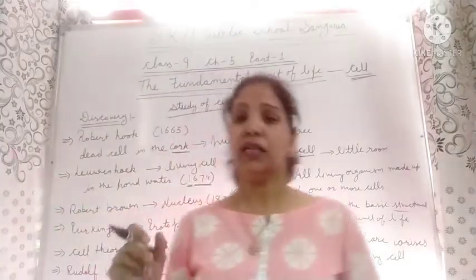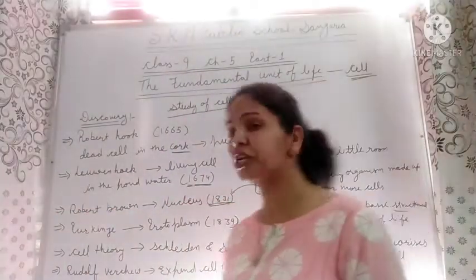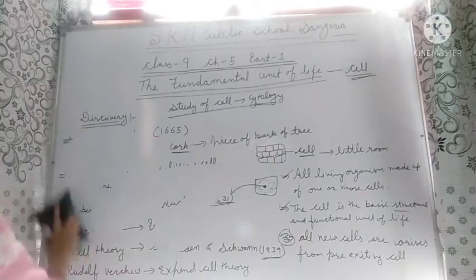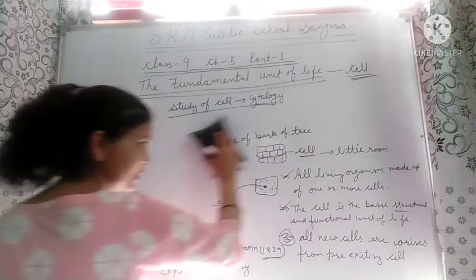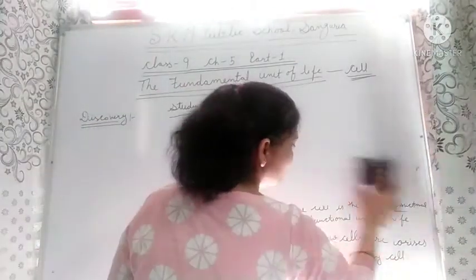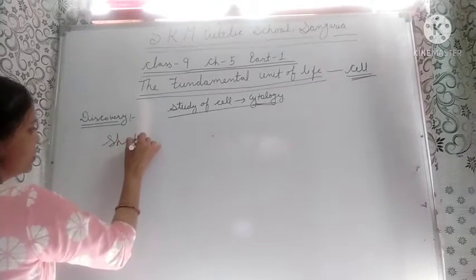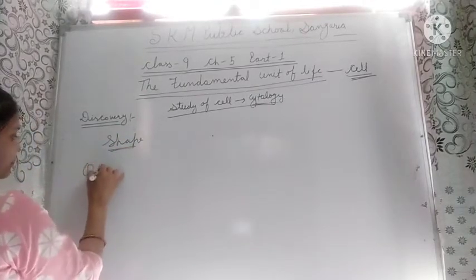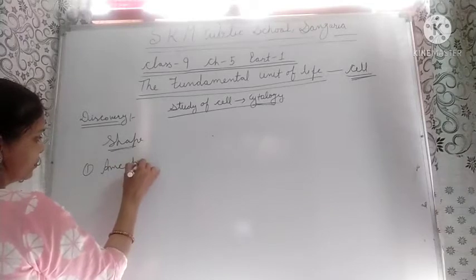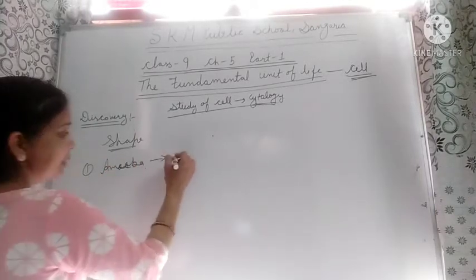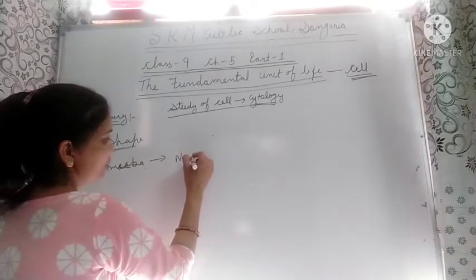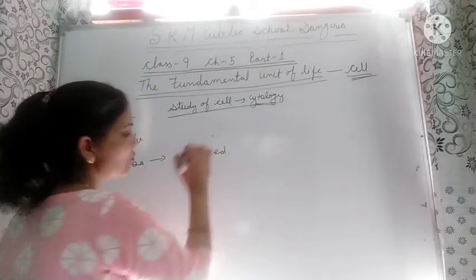Now we discuss the size and shape of the cell. Do cells have a fixed shape? Some cells have a fixed shape and some do not have a fixed shape — like amoeba, which does not have a fixed shape.